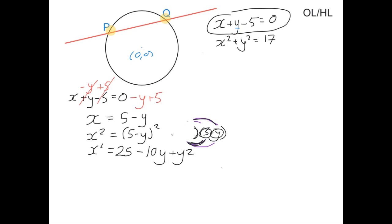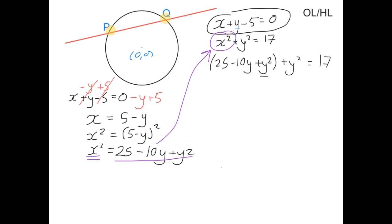So now, once we have this, we have our x². Now what I'm going to do is take this value for x² and substitute it in instead of the x² in the circle equation. When I do that, I get 25 - 10y + y² instead of our x², plus our y² equals 17.